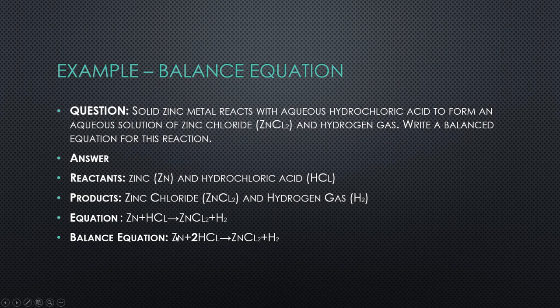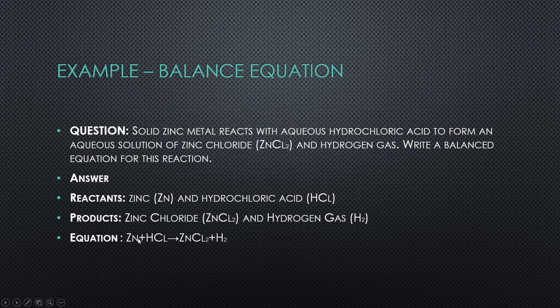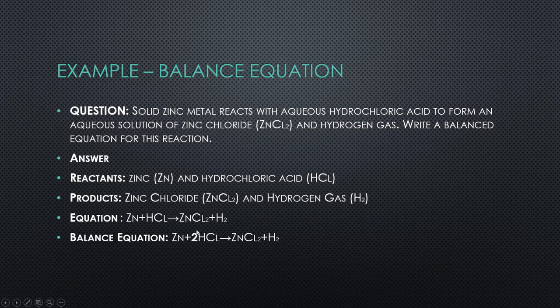So next step will be to write a balanced equation. So how you do that is you look at the number of atoms of each of the elements. So zinc, we have one zinc on this side, one zinc on this side. Hydrogen, we have one hydrogen and two hydrogens here. We have one chloride and two chlorides. That means we need to have two hydrogens and two chlorides on this side to match the two chlorides and two hydrogens on this side. So all you have to do is add a 2 in front of this. And that's it.